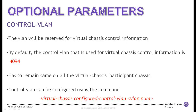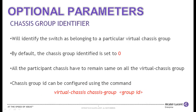Control VLAN can be configured using the command: virtual chassis configured control VLAN, followed by the VLAN number. The chassis group identifier is used to identify the switch as belonging to a particular virtual chassis group. All the participant chassis must have the same virtual chassis group identifier to be a part of the virtual chassis. If the chassis group identifier value is not set, then the default chassis group identifier is set to zero. Chassis group identifier value can be set using the command: virtual chassis chassis group, followed by the group identifier.